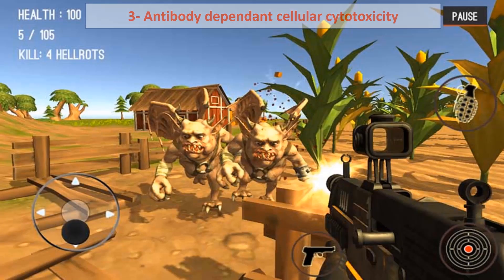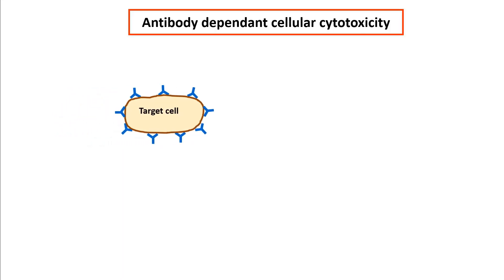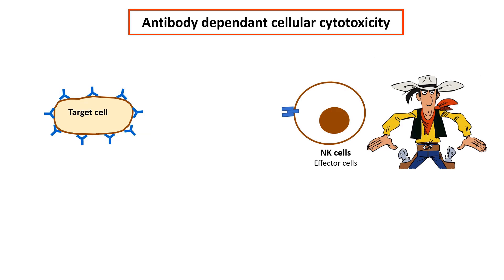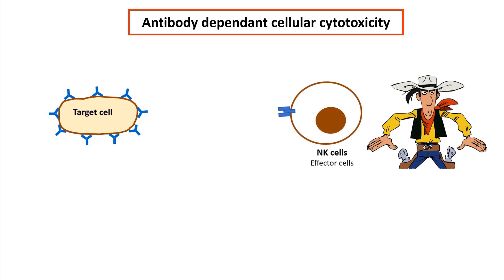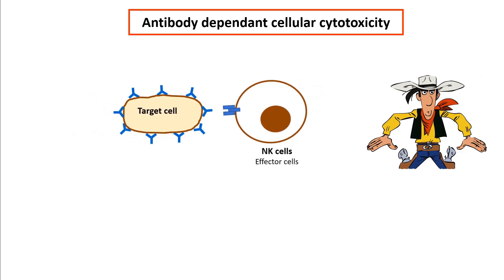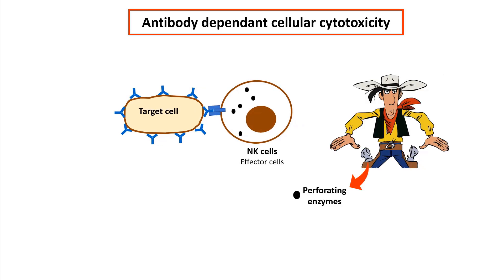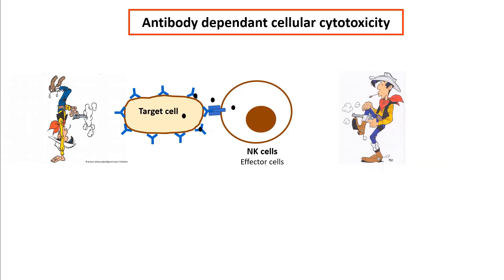Thirdly, antibody-dependent cellular toxicity. Antibodies attack antigens on the surfaces of the targeted cells. Then the FC part of the antibodies binds to specific receptors on the natural killer cells. The natural killers do not phagocytose the antigen-antibody complex, but instead they release a group of perforating enzymes, which ultimately destroy the target cells.